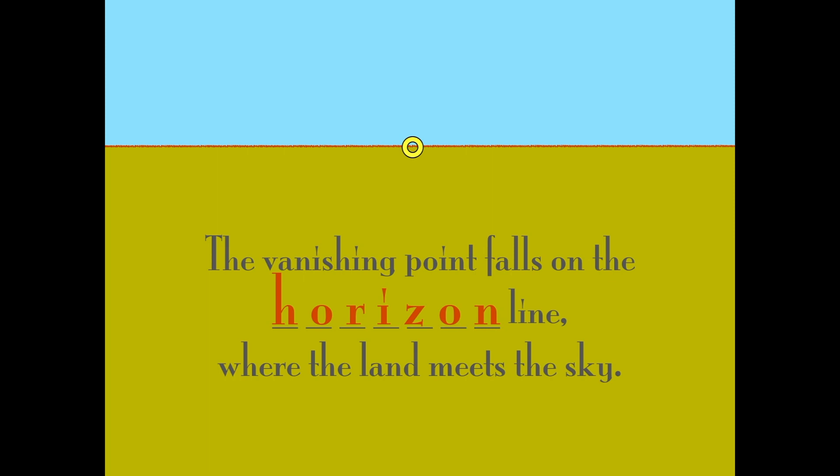So if you think about a super simple example, maybe you would just have two converging lines meeting at your vanishing point off on the horizon, and that would sort of suggest a road.